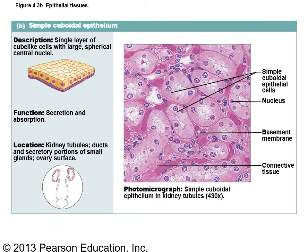Simple cuboidal epithelium is a single layer of cube-like cells with large spherical central nuclei. You can find this in kidney tubules — seen here cut cross-sectionally showing cube-shaped cells surrounding a lumen. The kidneys filter about 180 liters of fluid derived from plasma every single day, so this epithelium is important for secretion and absorption during that filtration process.